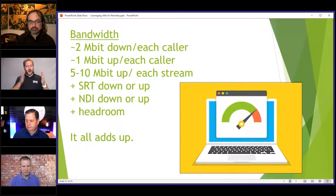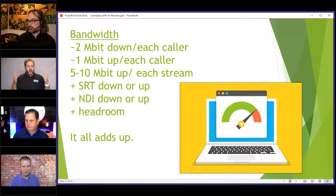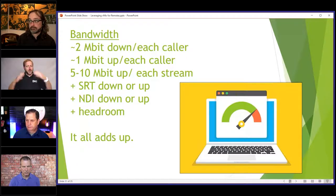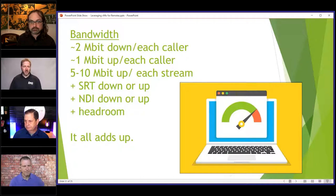If you've got your master streams and you want to stream to three places at 7 Mbps, that's 21 Mbps just for that. Are you sending SRT up or down? Are you sending NDI up or down? Plus, you need a bit of headroom because that internet bandwidth is not always exactly what you think — it might dip down a little bit and cause a problem. It all adds up.